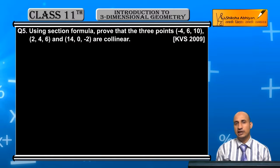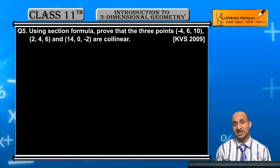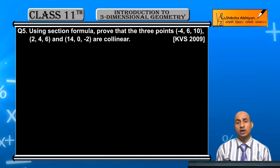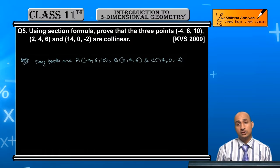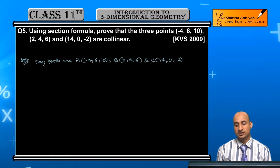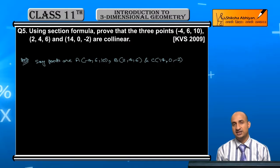Question 5 is given and we will prove here with section formula. First of all, I will give the naming. I have already given the name. The points are A, B, C. I will give the name to ABC.